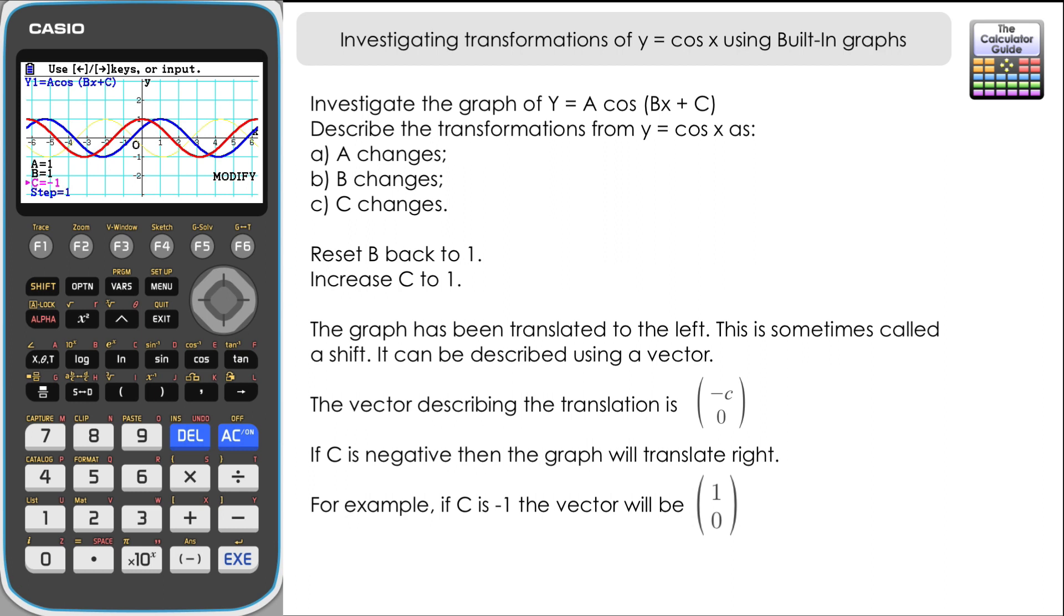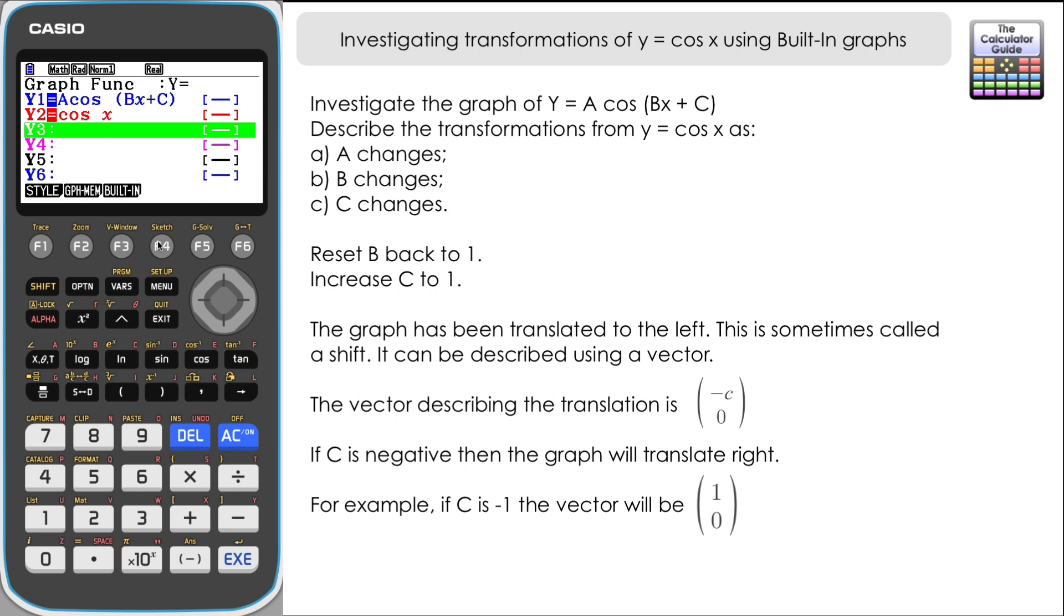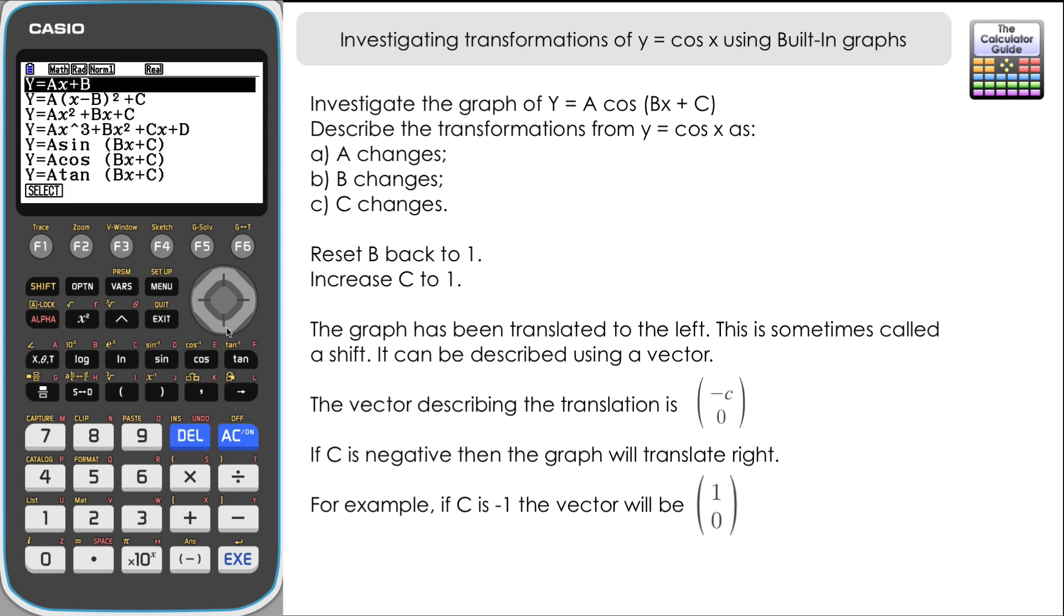So there we go, how we can use the built-in graphs to explore the transformation of certain functions. Let's just go back and have a look again what else is available. So from the graph menu it's tool F4 and then F3 for built-in. You can see there's others available here. We've got a linear graph, a completed square expanded quadratic, a cubic, and then we've got three trigonometric functions there. It might be worth exploring a similar sort of thing with sine, sine x as well, and you can perhaps see that reflection in the y-axis that you get when you change b to a negative.